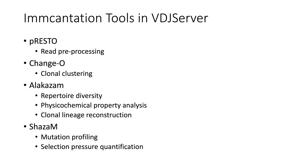The Immcantation tools provide a lot of those analysis capabilities. Here are the main tools we use: pRESTO is in there for read pre-processing. Those of you who have used pRESTO know there's a lot of flexibility in how you can use it — we've tried to bring a lot of that forward into the interface, so you can do barcoding, primer masking, UMI handling, as well as standard things like length and quality filtering, and collapsing of duplicate reads. So you pretty much have the full suite of capabilities there.